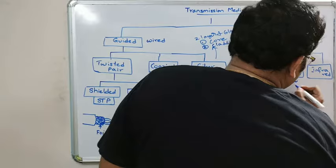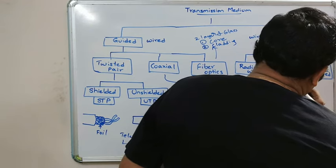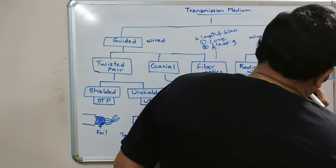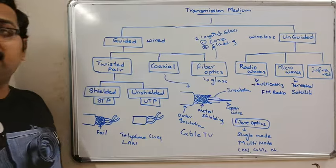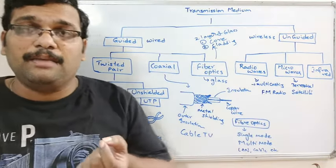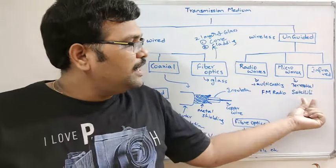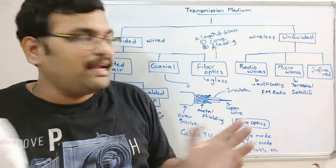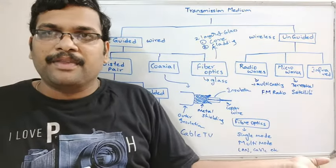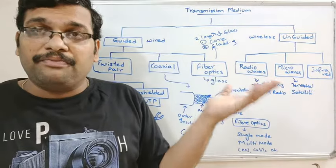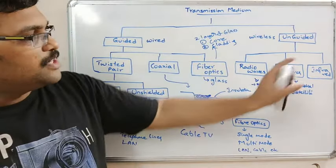Coming to microwaves — these are differentiated into two categories: terrestrial microwaves and satellite microwaves. The difference depends on range: within a limited range we use terrestrial microwaves, and for a wide range we use satellite microwaves. Best examples of satellite microwaves are mobile networks and weather forecasting.